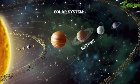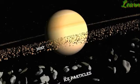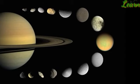Saturn is the second largest planet in the solar system. It appears yellowish in color. The rings of Saturn are made up of ice particles. Saturn is the only planet that is less dense than water. Its largest moon is Titan.